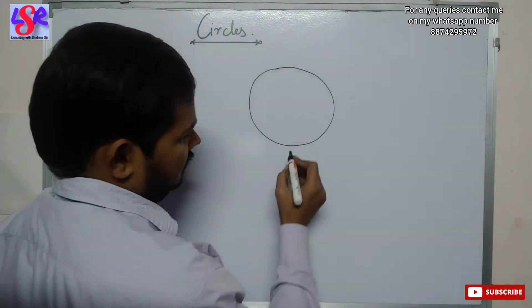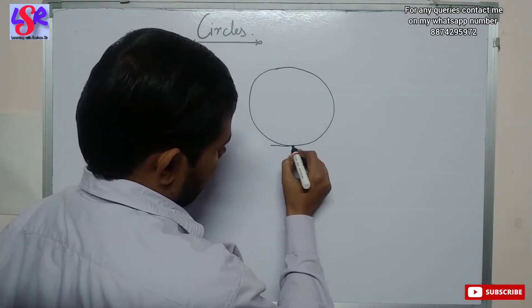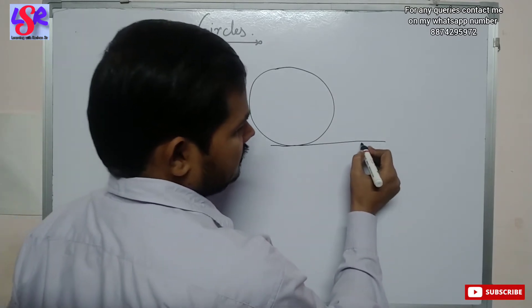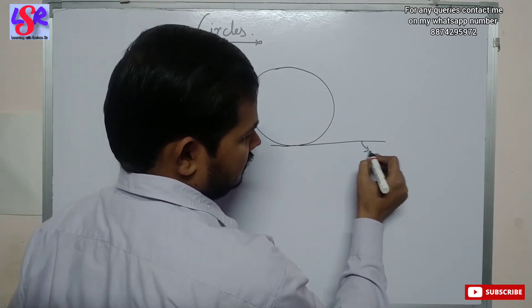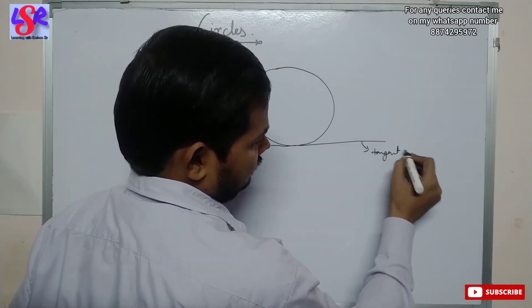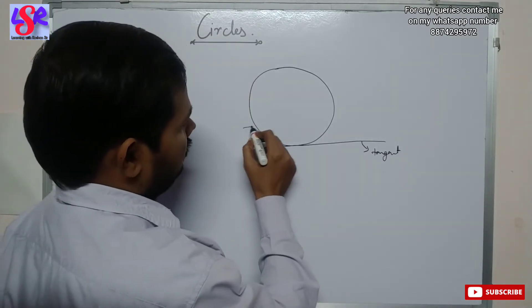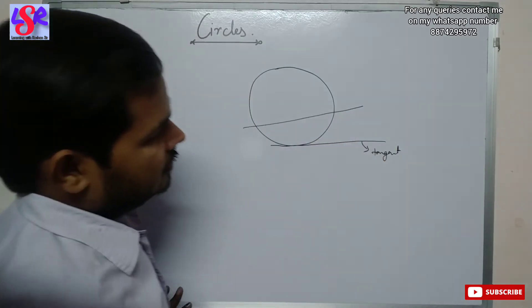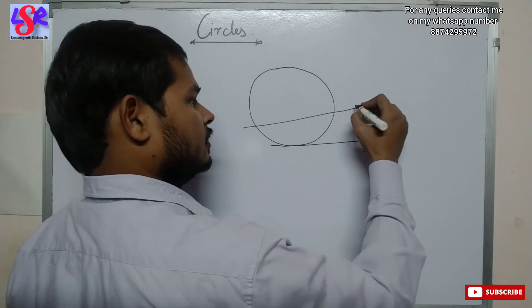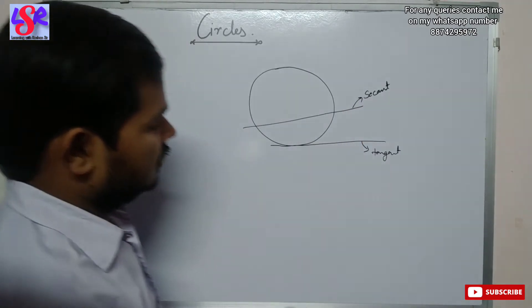If we have a line which touches the circle at a single point and passes away, then this line is known as the tangent of the circle. And if we have a line which passes through the circle by cutting at two points, this is known as the secant of the circle.